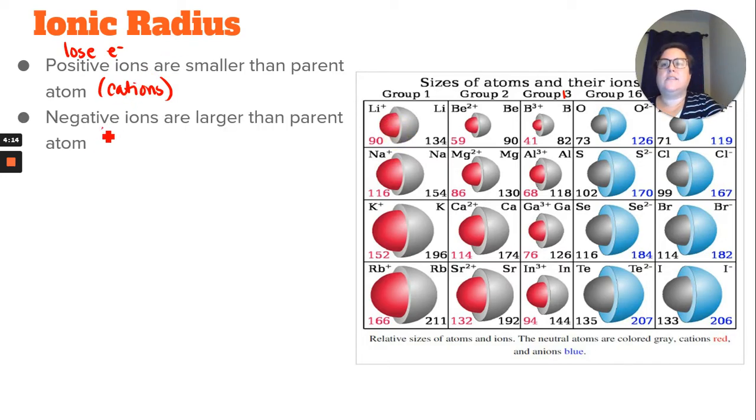Negative ions are your anions, and we are gaining electrons. And so what happens is that effective nuclear charge starts to weaken because you're adding more negatives, and so there's not as much attraction between the positive and negative when you have more negatives. So it's allowing that energy level to kind of expand a little bit. And so we can look at groups 16 and 17 here, and that blue shell, which is your anion, is getting larger than that gray parent atom.